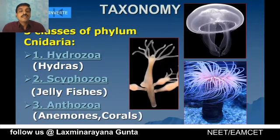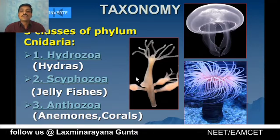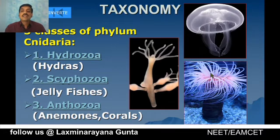Phylum Cnidaria is divided into three classes: Hydrozoa, Scyphozoa, and Anthozoa. Hydrozoa includes all hydras, Scyphozoa includes jellyfishes, and Anthozoa includes sea anemones and corals.